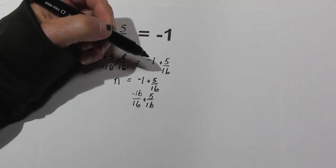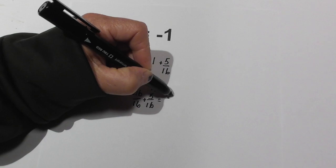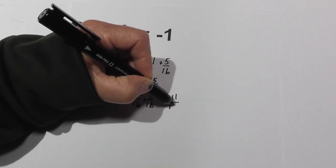Now we have a common denominator, so we just add: negative 16 plus 5 is negative 11 over 16. So that's our answer.